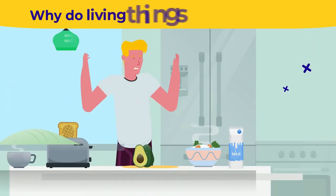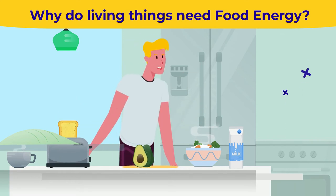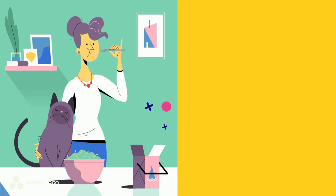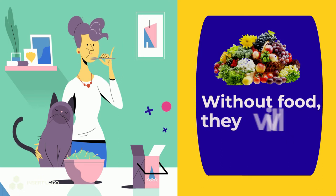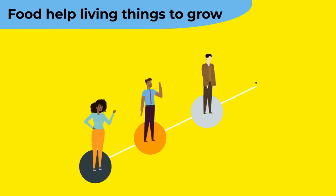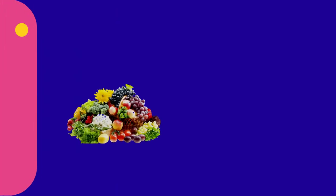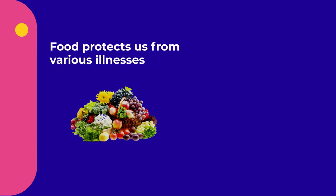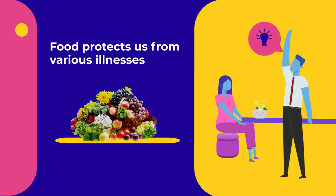Why do living things need food energy? Living things need food to stay alive. Without food they will die. Food helps living things to grow, and they will stop growing if they are not given proper food. Food protects us from various illnesses as it keeps us healthy and strong.